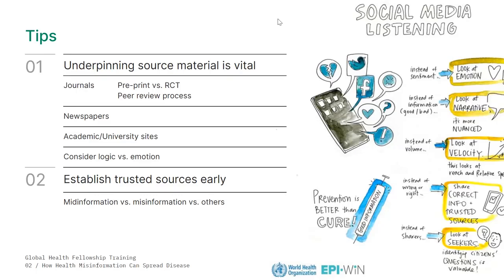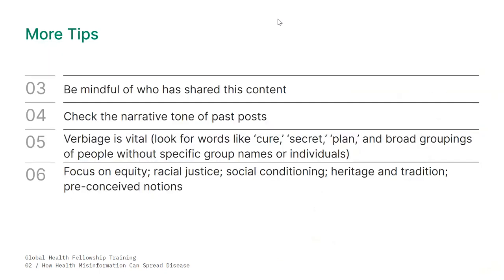Consider mid-information versus misinformation. If something is partially true, it's difficult to decide, but we can help. If something is not entirely true, alert people to that. Be mindful of who shared it and check the narrative tone. Certain words like 'cure,' 'secret,' or overly broad phrases like 'all participants' or 'every study participant' are things we rarely use in public health, especially in epidemiology and infectious diseases — those are great clues that someone may be sharing something inaccurate.